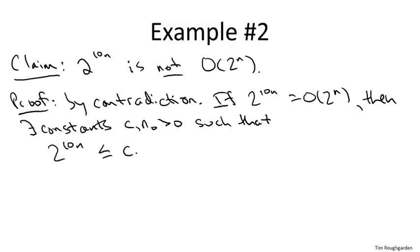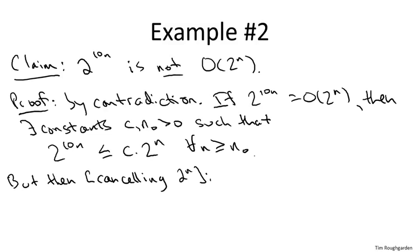So to complete the proof, what we have to do is go from this assumption and derive something which is obviously false. But that's easier to do just by canceling this two to the n term from both sides. So if we divide both sides by two to the n, which is a positive number since n is positive, what we find would be a logical consequence of our assumption would be that two raised to the nine n is bounded above by some fixed constant c for all n at least n naught.